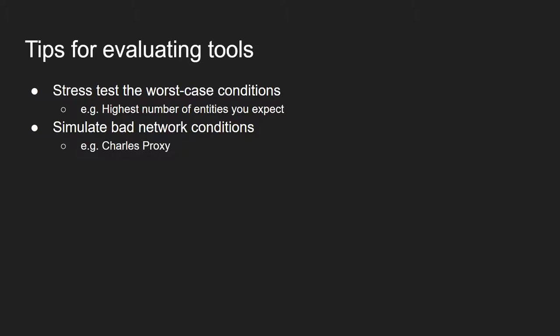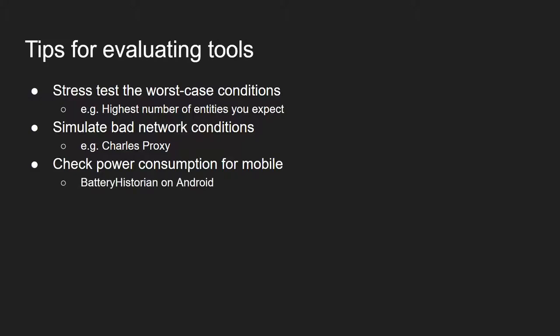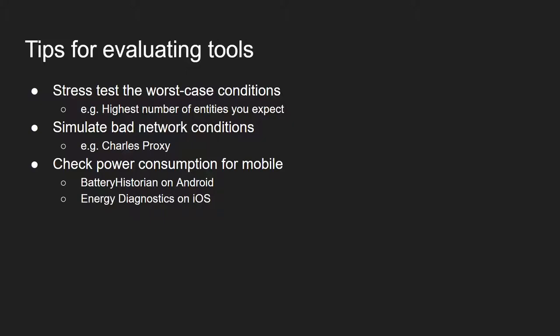CharlesProxy is a good option for simulating poor network conditions. Similarly for power consumption — on Android you can use Battery Historian, which takes a little bit of work to get up and running, but if you're shipping on Android you're probably going to want to use this at some point anyway, so it won't be a waste of time. For iOS, it's easier — they have some pretty good tools for this, and I'll leave a link in the description with some resources. Finally, it can definitely be worth doing a quick web search, just 'X engine versus Y engine' or similar queries, just to identify any things you might not have thought of — any unknown unknowns.